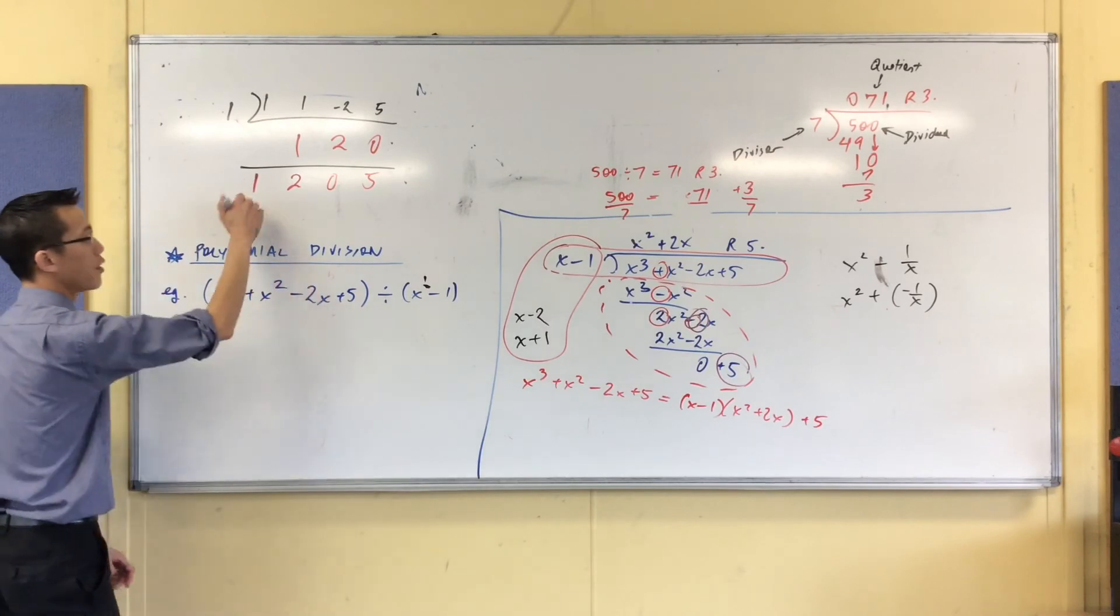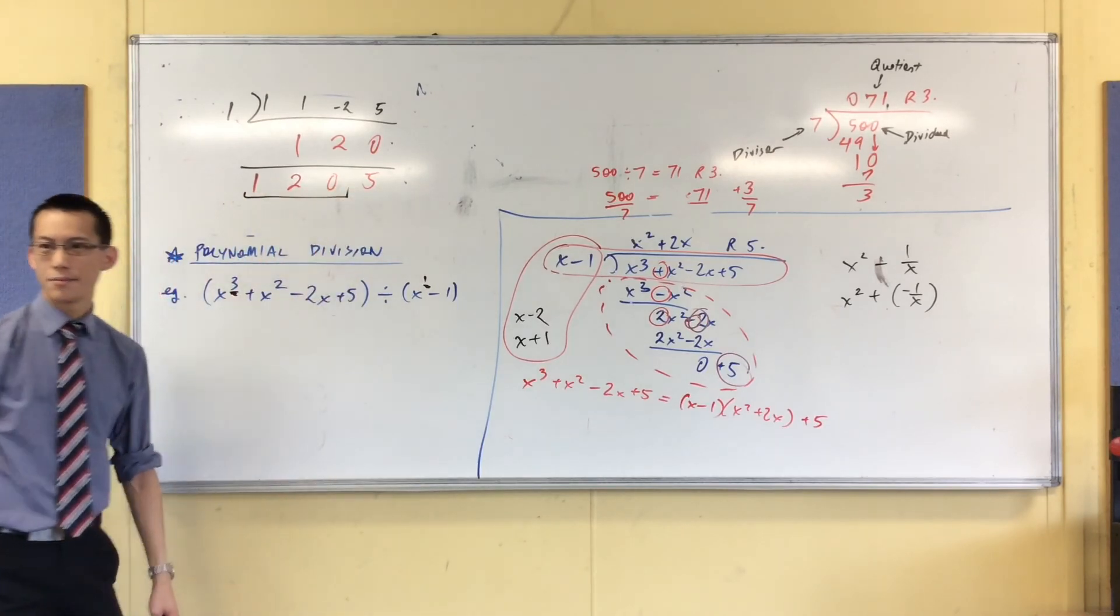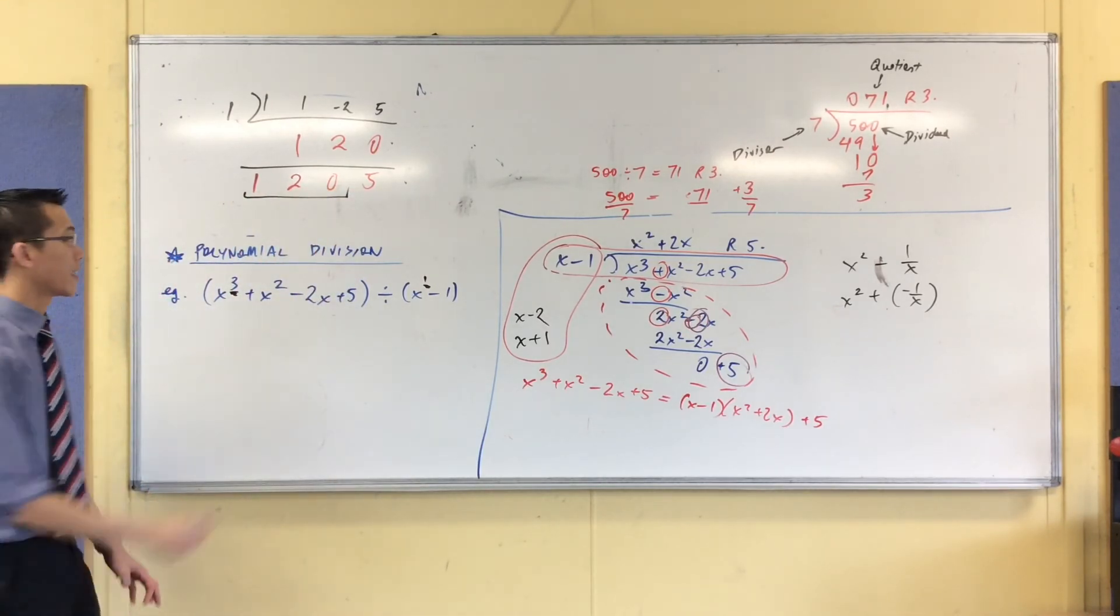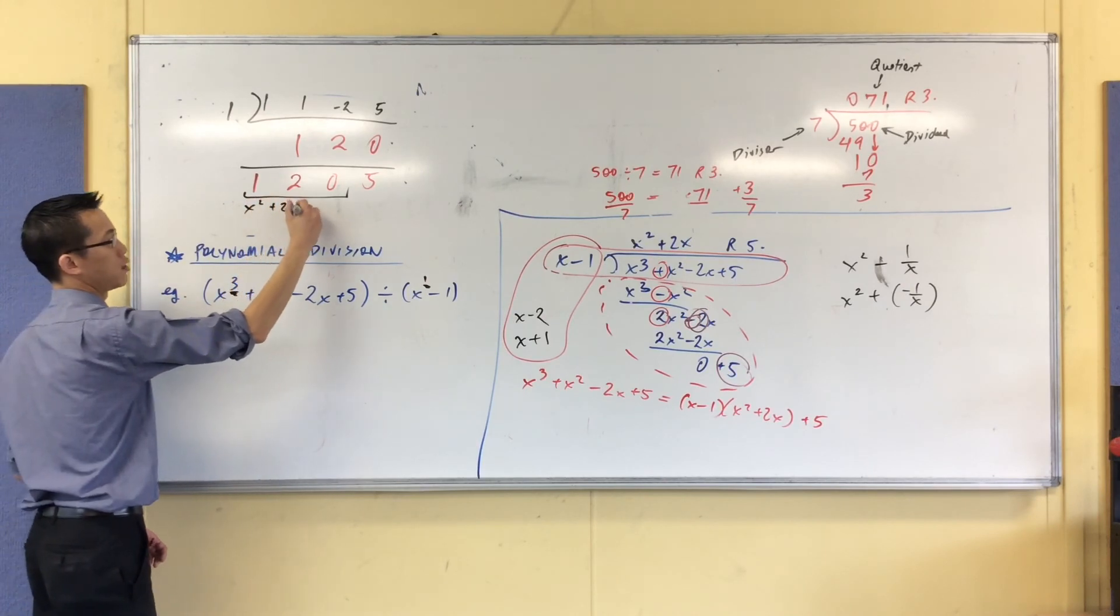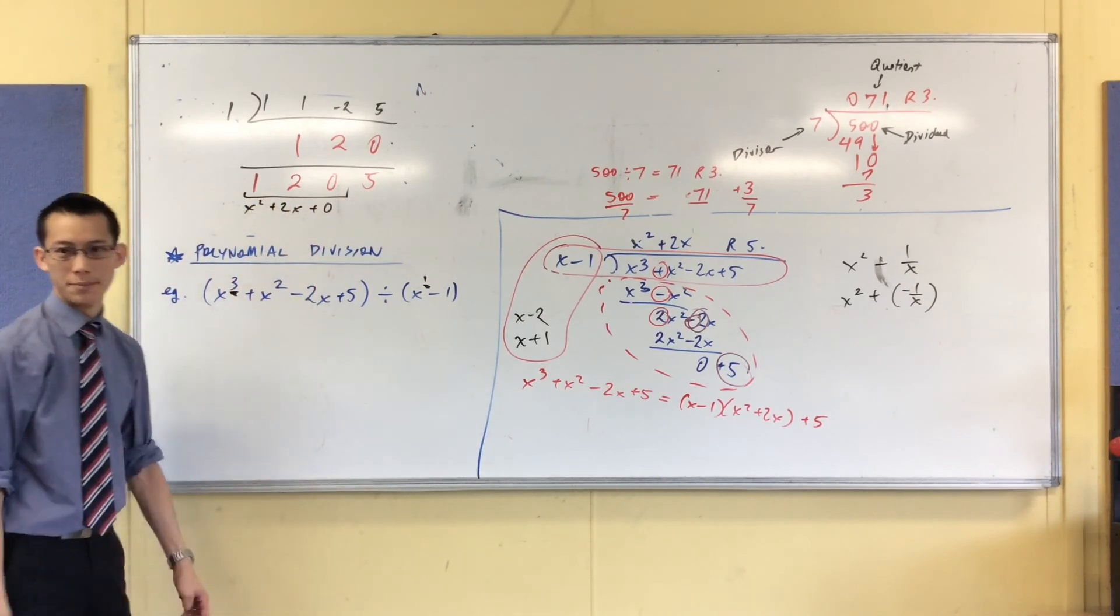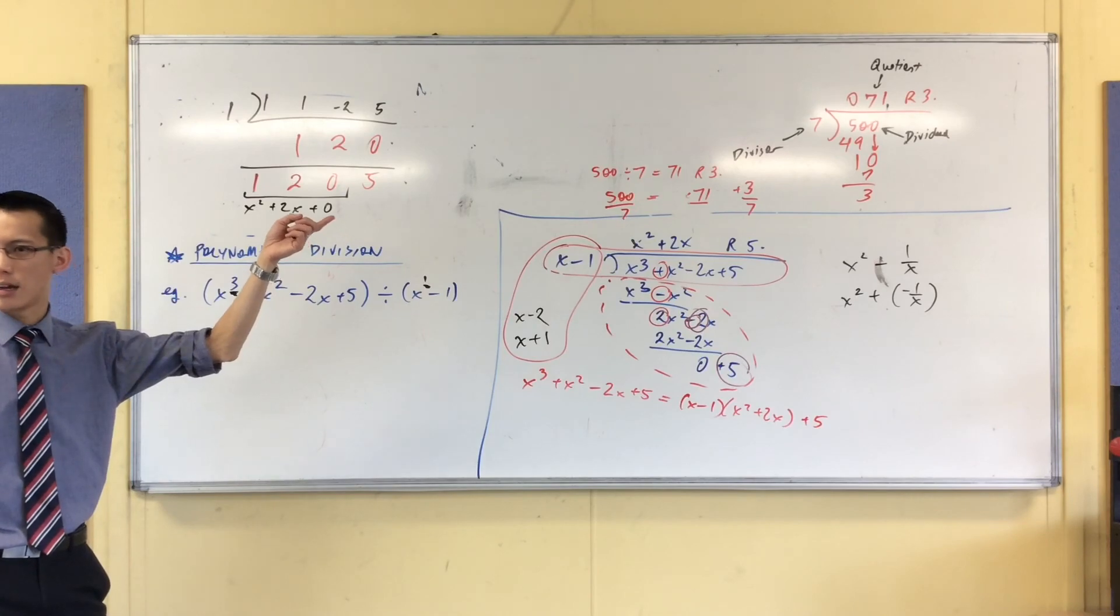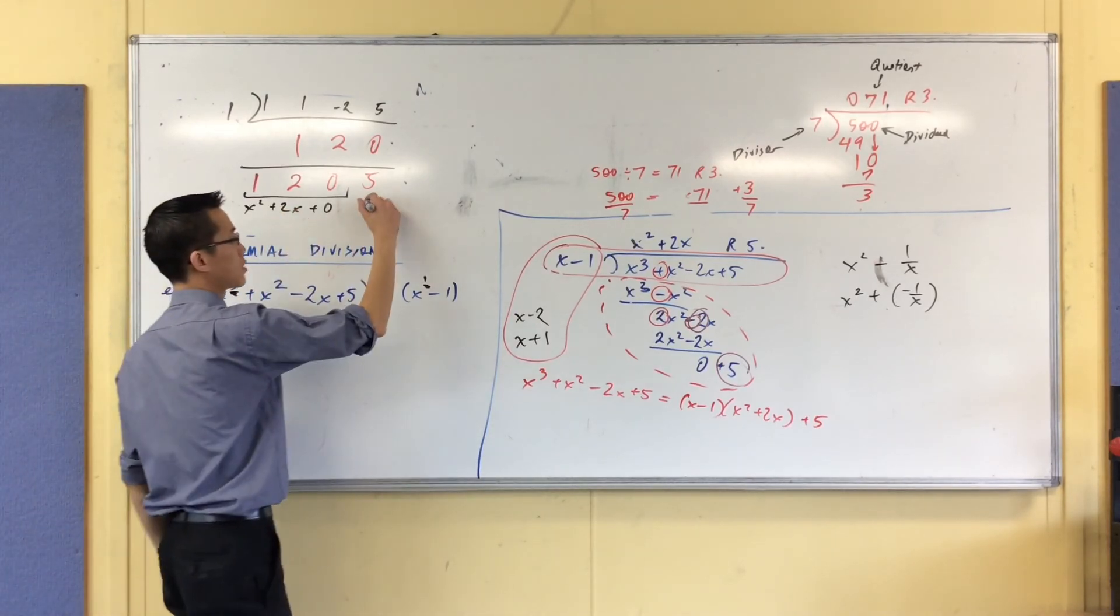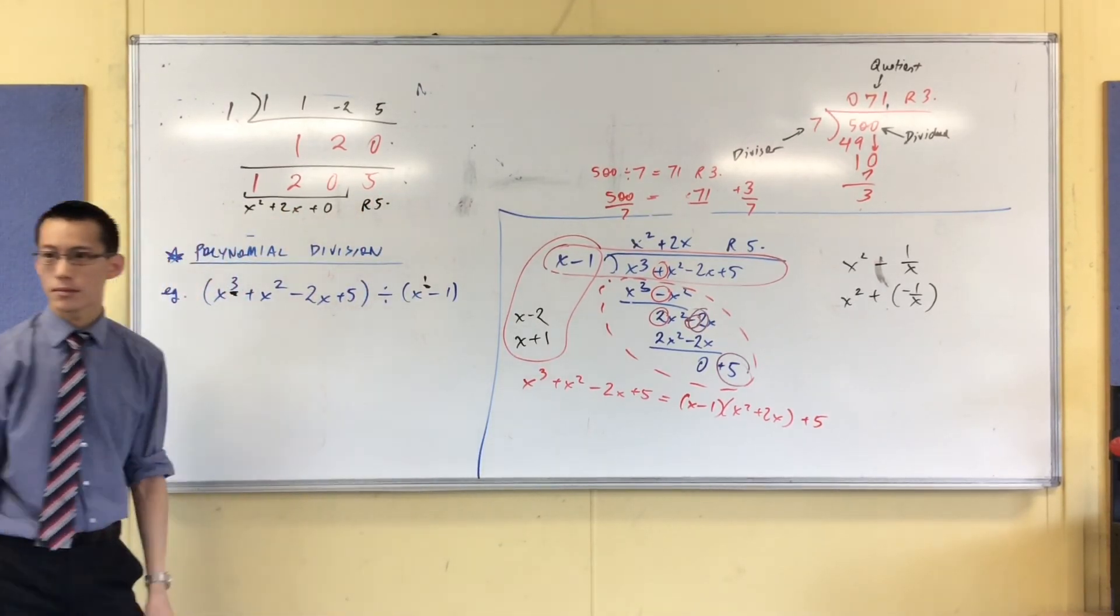So these represent the coefficients of a quadratic, namely x squared plus 2x plus no constant. I have a number ending up on the end. What's that guy? That's the remainder. That's what's left over. Okay? Same.